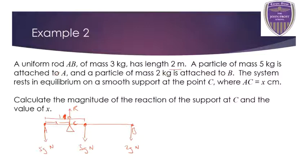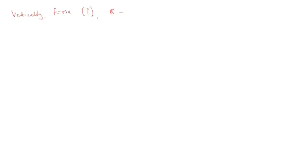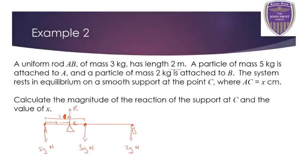To find the reaction force, I'll resolve vertically with upwards as my positive direction. The only upward-acting force is R. All other forces act downwards: 5g, 3g, and 2g. So R minus 5g minus 3g minus 2g equals 0. Rearranging gives R equals 10g Newtons, which is 98 Newtons, because g is 9.8 meters per second squared. So the reaction at C is 98 Newtons.